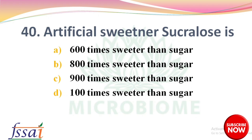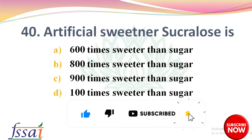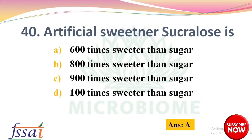Next question: the artificial sweetener sucralose is — options: 600 times sweeter than sugar, 800, 900, 100. The right answer is option A, 600 times sweeter than sugar.